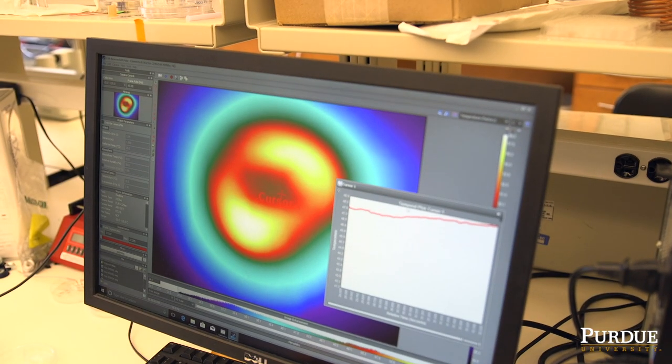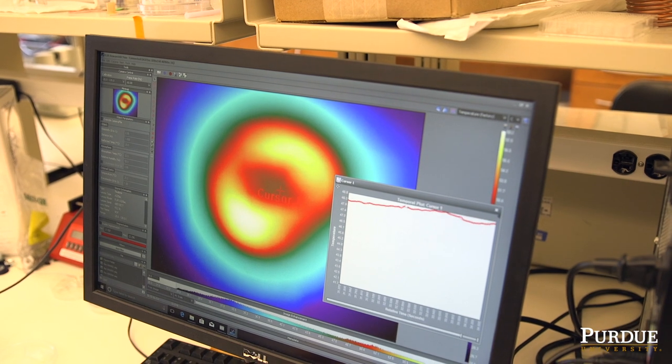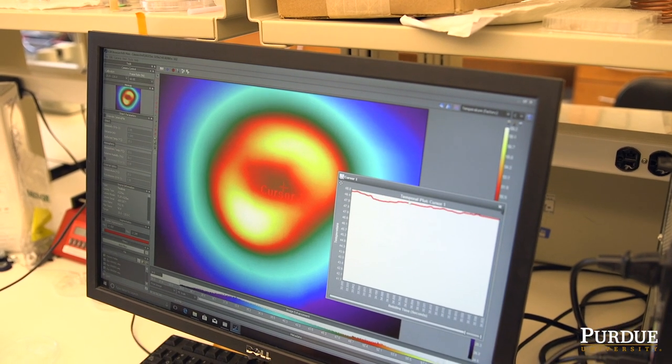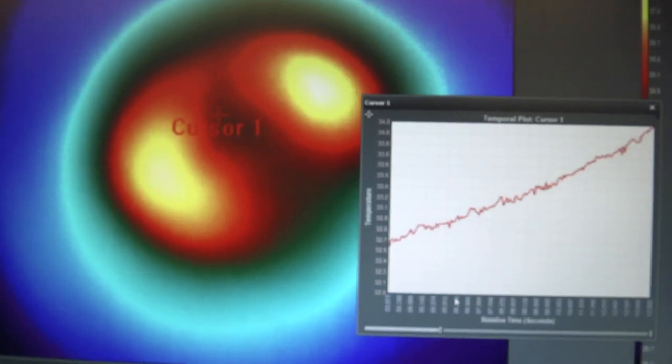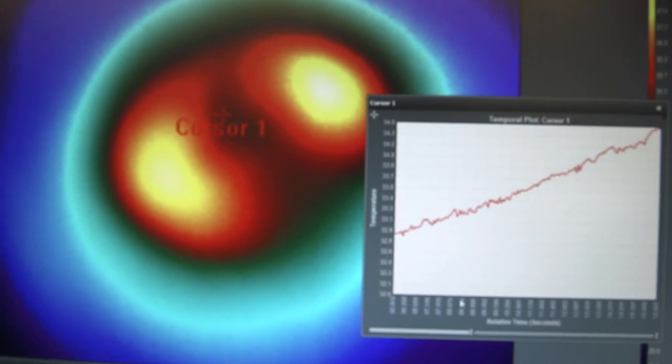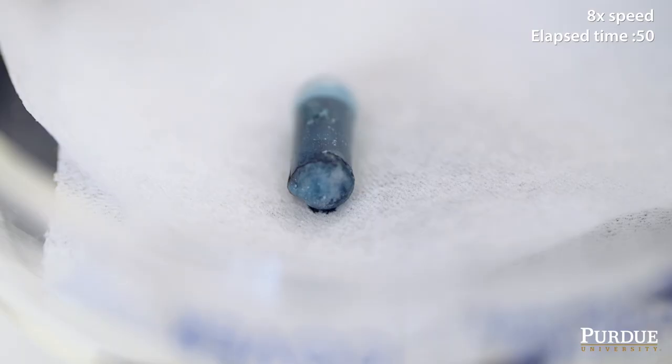And then this magnetic field will induce heat in the metal piece inside the capsule. This capsule, which is filled with phase-changing material, will heat up due to the stainless steel. And then when it reaches the melting temperature, it melts and the drug component will diffuse out.